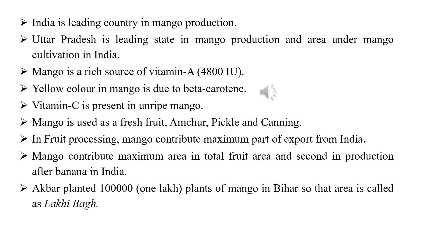Mango is a rich source of Vitamin A — about 4800 IU (international units) of Vitamin A is found in mango, which is the highest among fruits. Papaya is at second position with about 2020 IU. Generally, one international unit equals 0.003 milligrams. The yellow color in mango is due to beta-carotene, a form of carotene or Vitamin A. In unripe mango, Vitamin C is higher than Vitamin A, but in ripe mango Vitamin A is higher than Vitamin C.